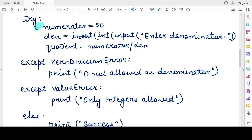So let us again consider the same integer division program. If we have a numerator variable which has the value 50 and we are accepting the value of the denominator from the user and we are calculating the quotient.